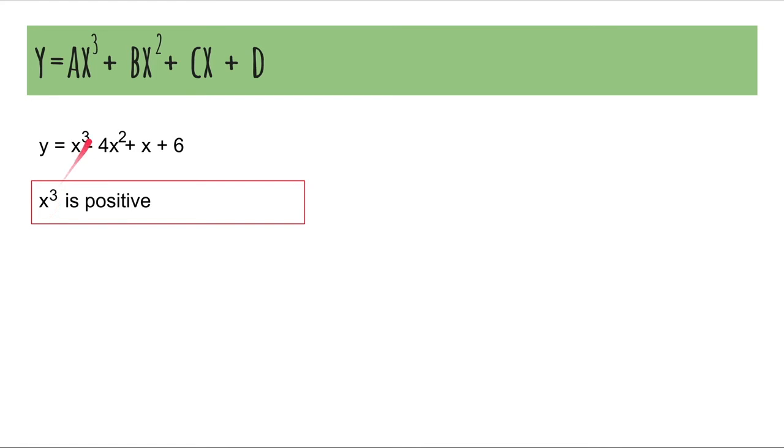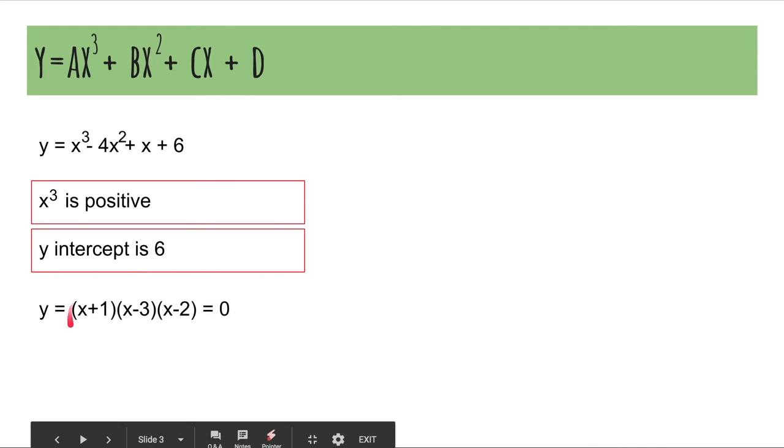We know that the x cubed term is positive. So, it's going to start down and go up. The y-intercept is 6 because that's the constant. And so, to find where it crosses the x-axis, you have to factorize it. And this gives you the solutions.